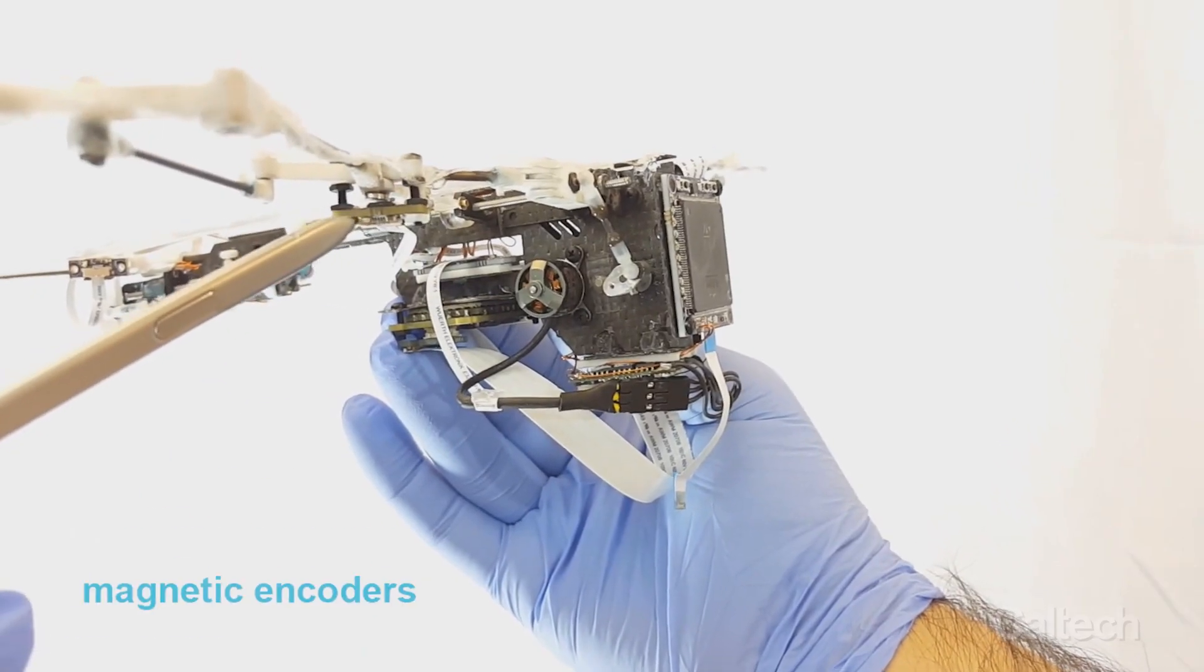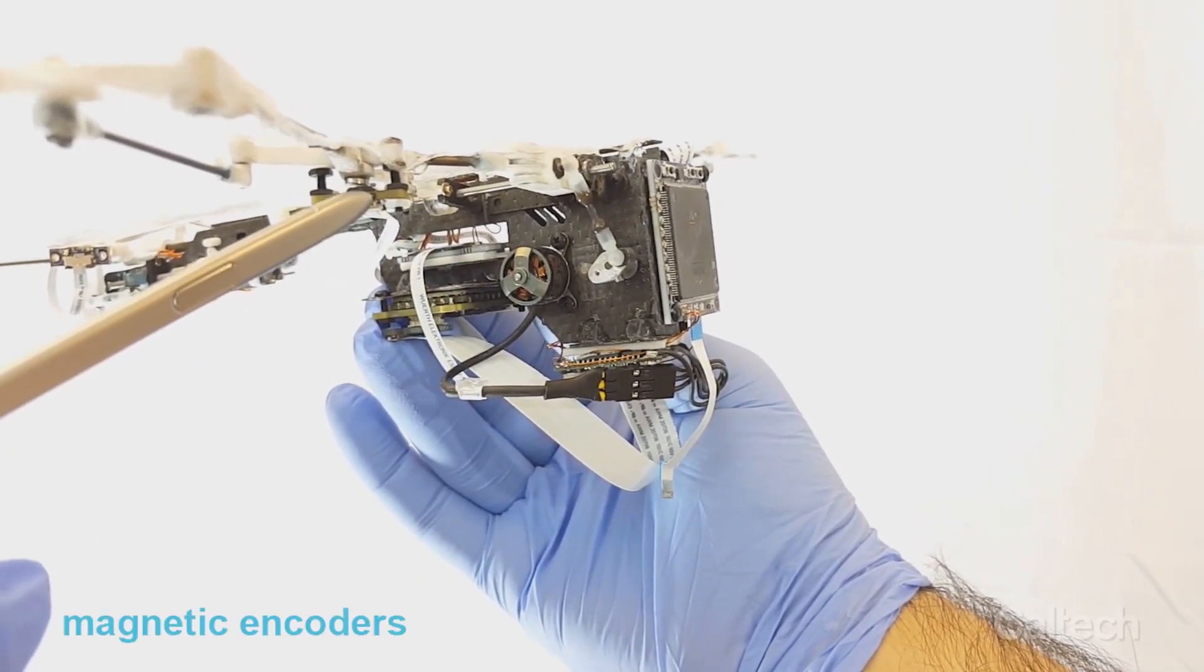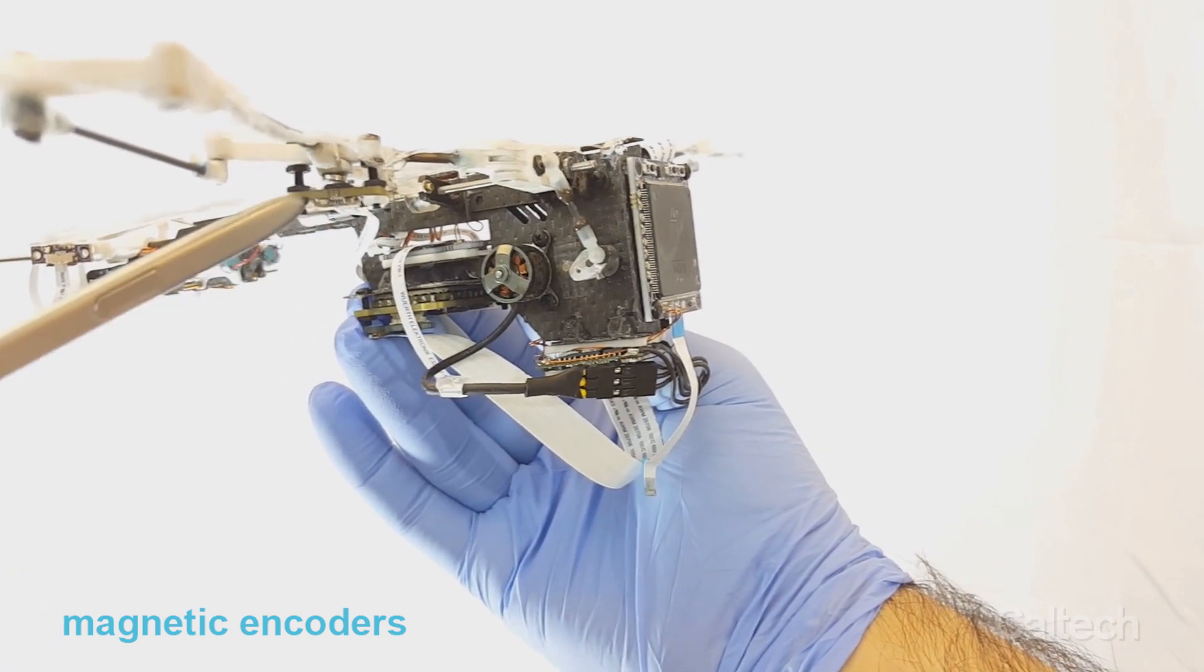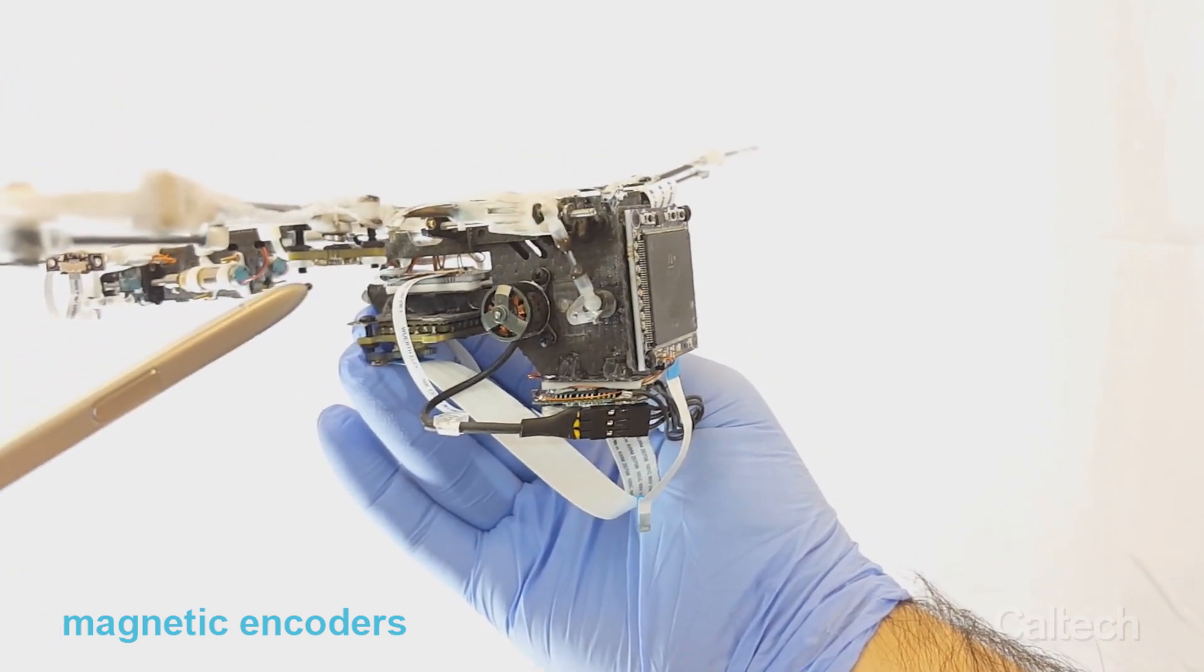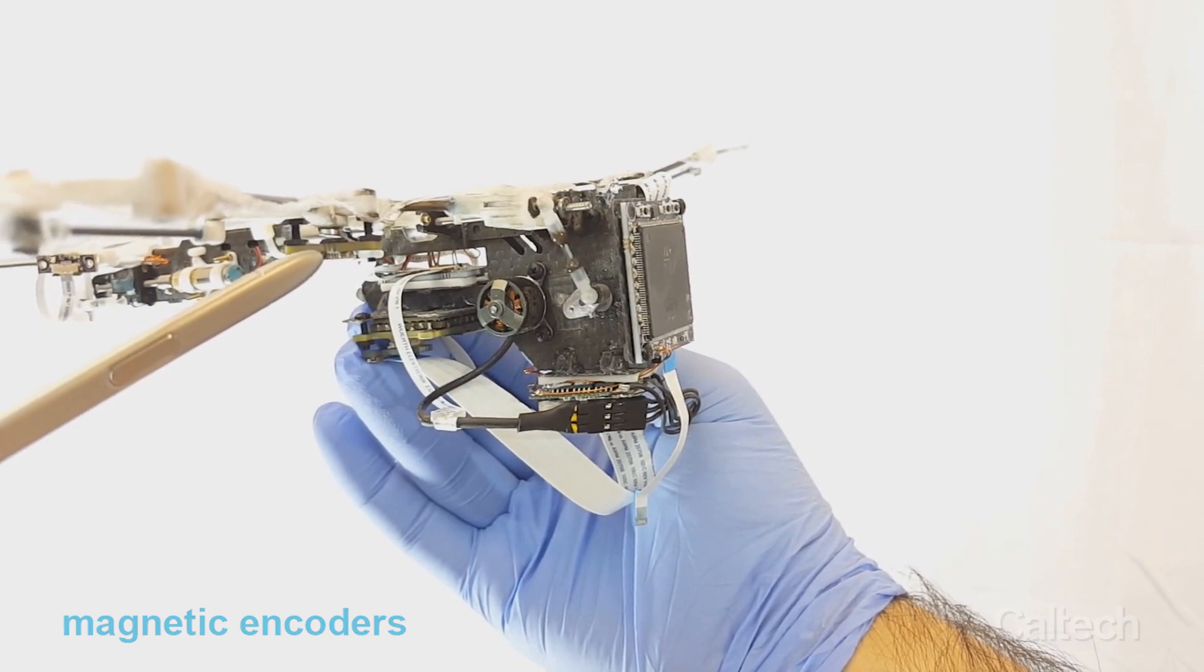We have five magnetic encoders located at the elbows, hip joints, and shoulder joints to read the relative angles between the limbs with respect to the body.